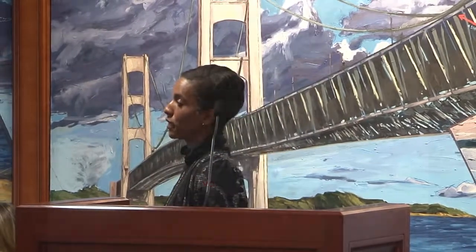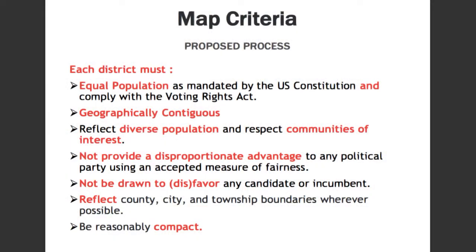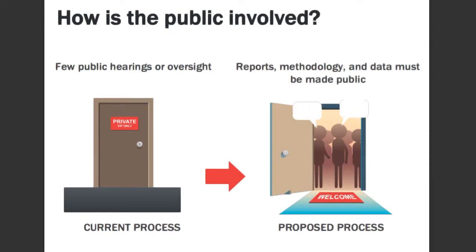The policy does include the APOL standards plus the two additional things: not wanting to favor or disfavor any candidate or incumbent; must be reasonably compact; must reflect diverse population and have respect for communities of interest. The process will have reports, methodology, and data that must be made public — making sure that these things are fair, independent, and transparent.